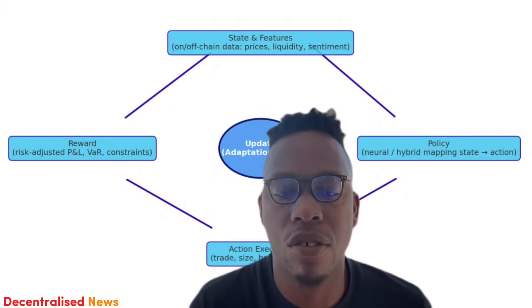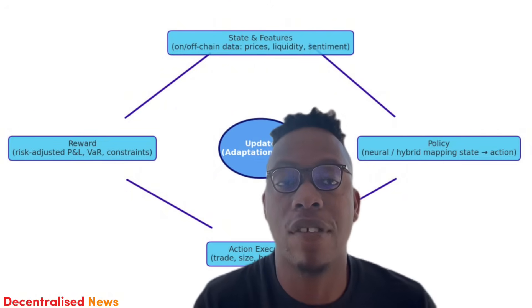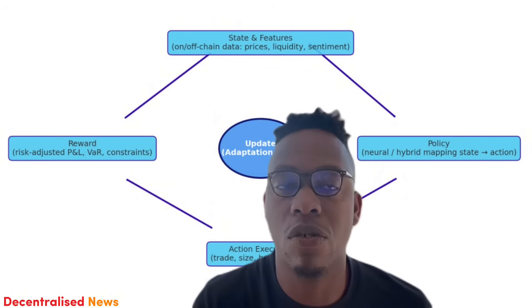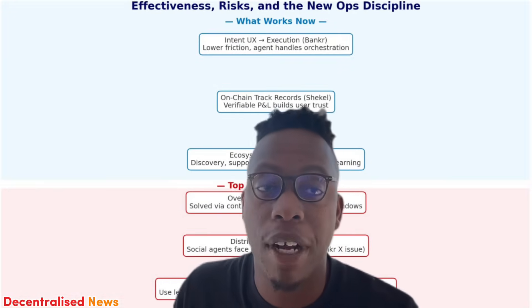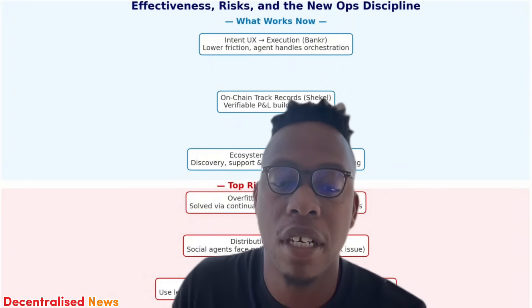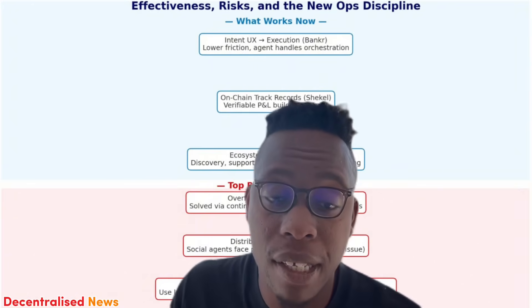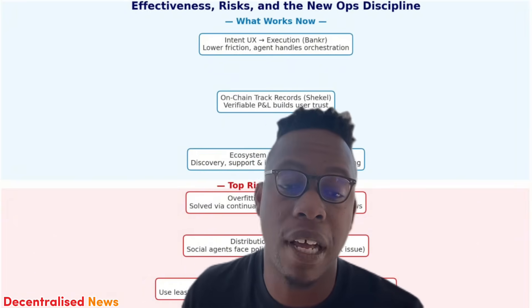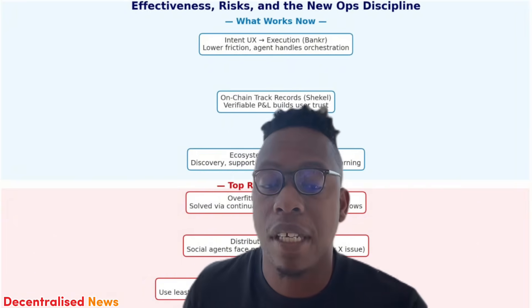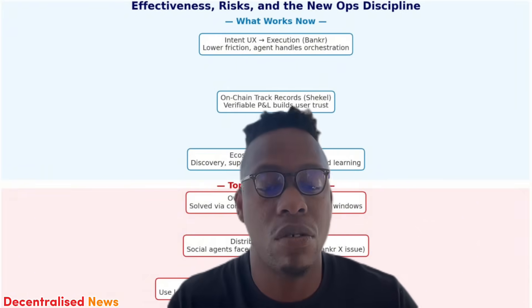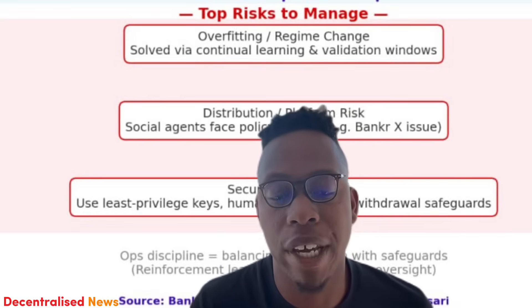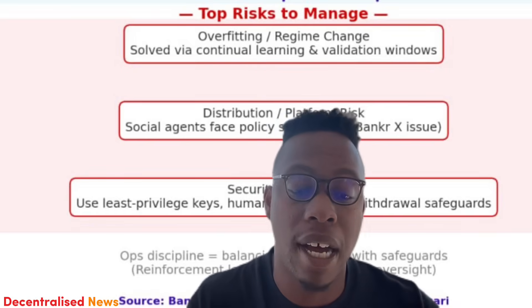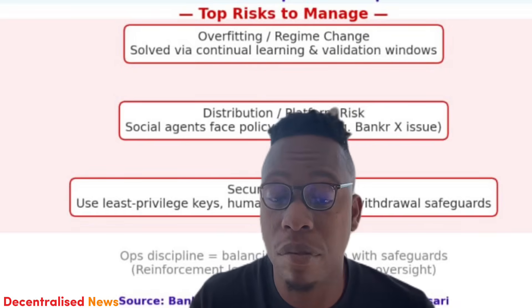There are clear benefits: intent UX execution like Banker lowers friction and drives usage, letting the agent handle orchestration. On-chain track records from Shekel-style funds are verifiable — P&L builds trust faster than opaque CeFi products. Consistent flywheels around discovery, support, and iteration help agents grow.